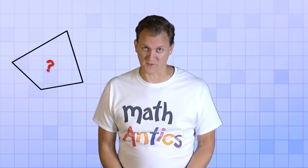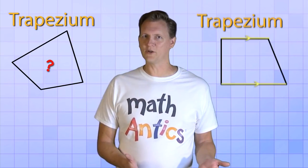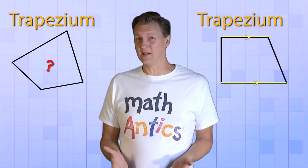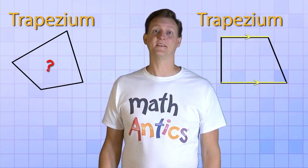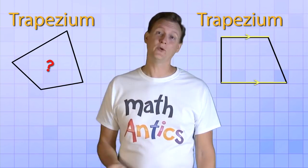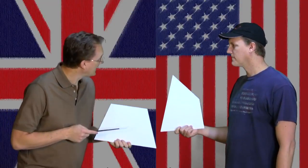Ah, now here's the really confusing part. In America, this is sometimes called a trapezium. But isn't that what they call a quadrilateral with only one pair of parallel sides in the UK? Yep! Unfortunately, the same word is used to describe two different things in two different countries.